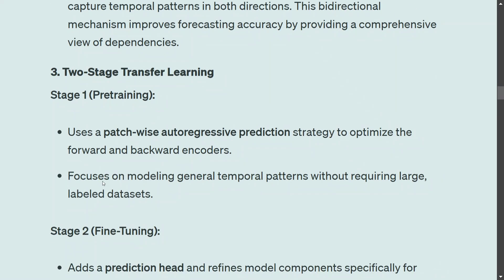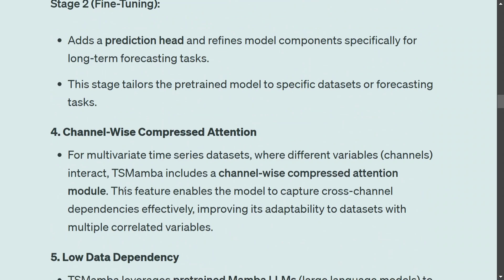TS Mamba involves two-stage transfer learning. The first stage is pre-training with patch-wise auto-regressive prediction. Auto-regressive basically means using past points to predict the next point — in time series, if you are predicting for February 1st, you might use the past 30 days of data. The second stage is fine-tuning. We won't deep-dive into very complex terms here since this is just an overview of TS Mamba.